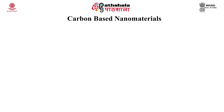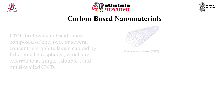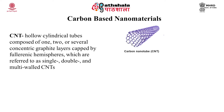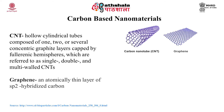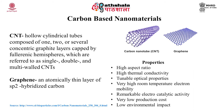Next, we will discuss carbon based nanomaterials. The most commonly used nanomaterials are CNTs (carbon nanotubes) and graphene. CNTs are hollow cylindrical tubes composed of one, two or several concentric graphite layers capped by fullerenic hemispheres, referred to as single, double and multi-walled carbon nanotubes. Graphene is an atomically thin layer of sp2 hybridized carbon. Both provide advantageous properties such as high aspect ratio, high thermal conductivity, tunable optical properties, very high room temperature electron mobility, remarkable electrocatalytic activity, very low production cost, and low environmental impact.